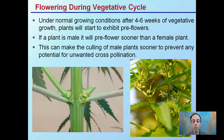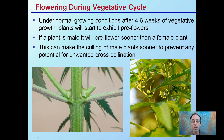These are pre-flowers — they are not mature in any way. They are showing or demonstrating the gender of the plant that you're looking at. You'll either have pre-female flowers or pre-male flowers. The male flowers typically show up sooner because they're looking to produce pollen to pollinate the female.